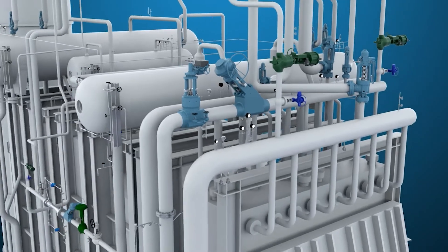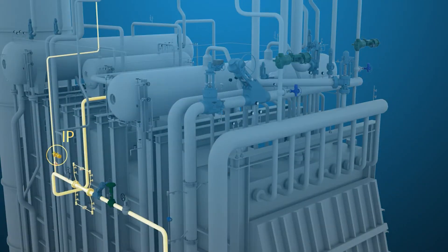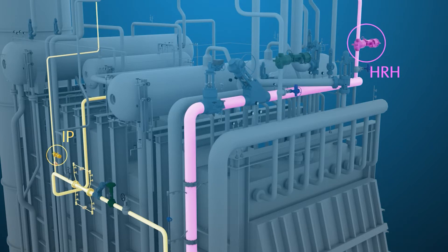The sky vents can be installed on LP, IP, hot reheat, or high-pressure superheater outlet piping.